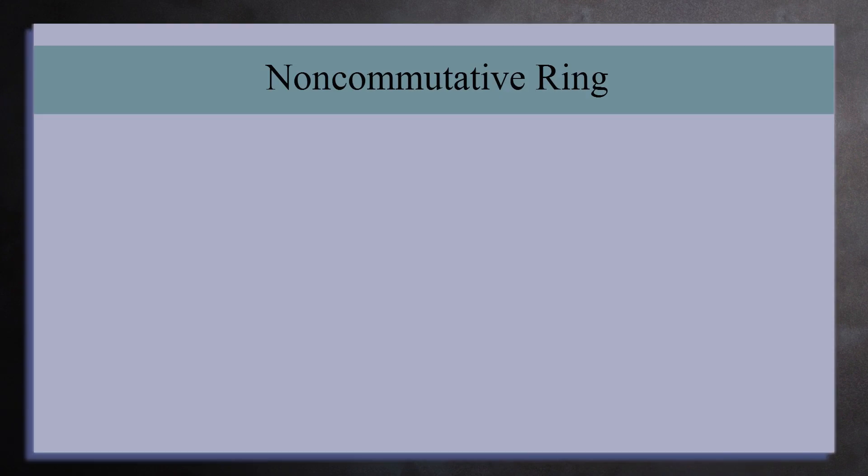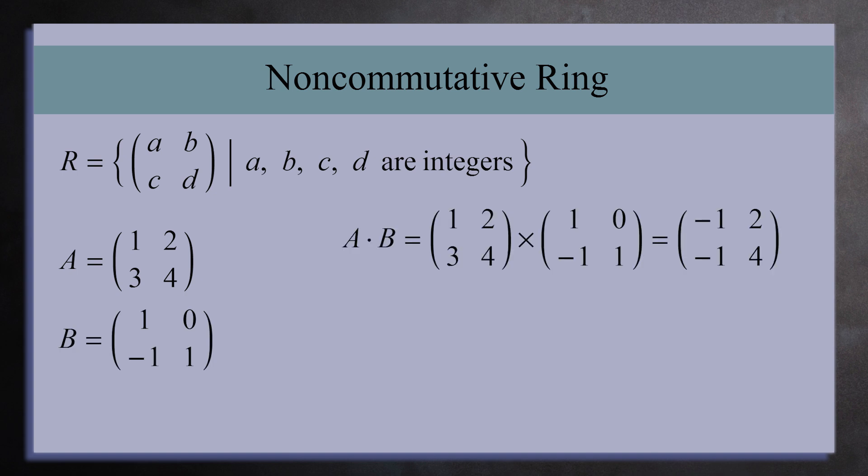Let's now look at a ring that's not commutative. The classic example here are matrices. For instance, the set of 2x2 matrices with whole number entries are a ring, but it's not commutative. To see why, consider the two matrices 1, 2, 3, 4, and 1, 0, negative 1, 1. Here, A times B does not equal B times A, so this ring is not commutative. We call this a non-commutative ring.